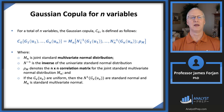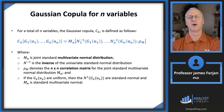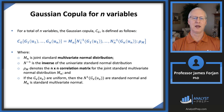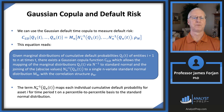For n variables, we take the Gaussian copula function and impose our correlation matrix on the right. Mathematically, we use N raised to the minus one — the inverse of the standard normal distribution — inside the brackets. I'll explain what that inverse means as we work through the table example.